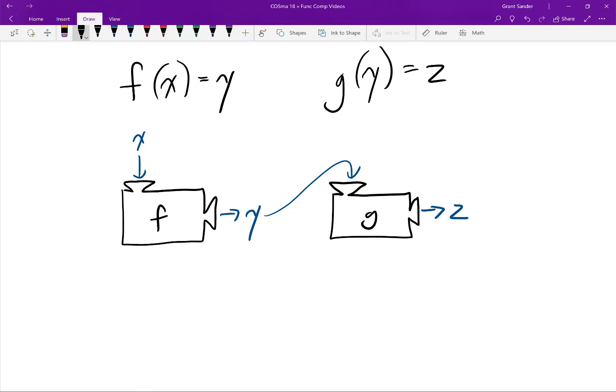So chaining together these two function processes produces a single process. If we ignore what goes on in the middle and think of this just as one function process, then we can represent this. We'll just draw a little rectangle around it.